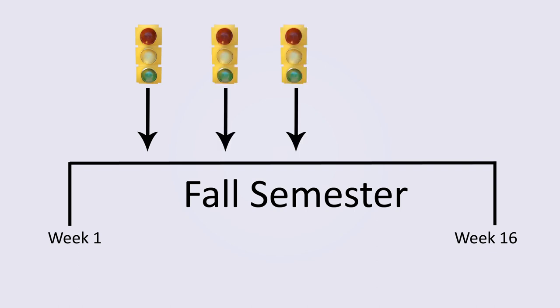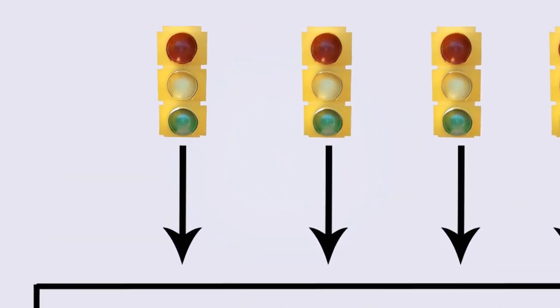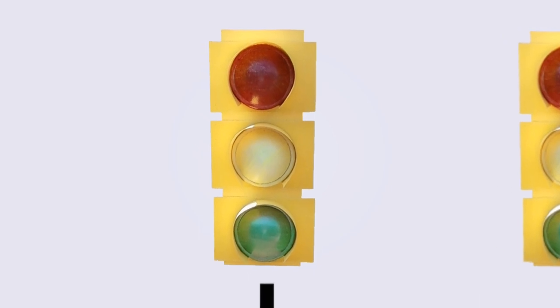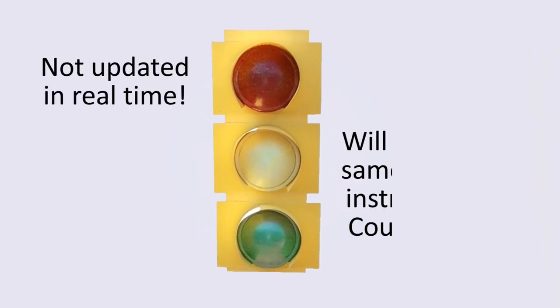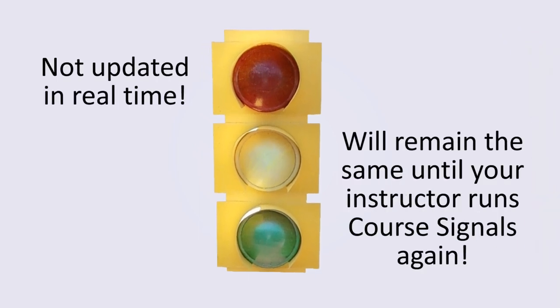Your instructor may run signals throughout the course. It's up to them to decide how often they run it. When your instructor runs course signals, you'll see a stoplight when you log into Blackboard. It isn't updated in real time, so this stoplight will remain the same until your instructor runs course signals again. Well, unless you get the same color, then you won't notice any difference.